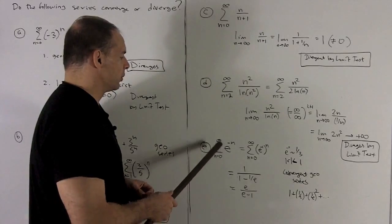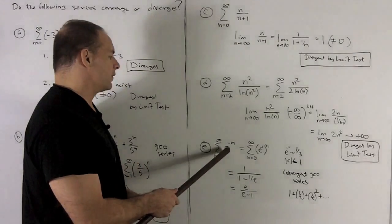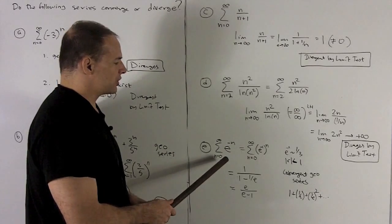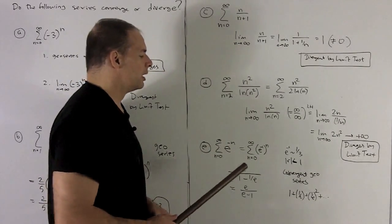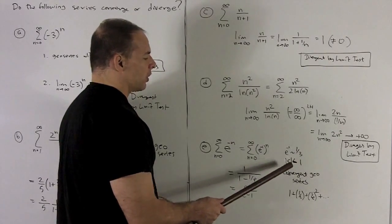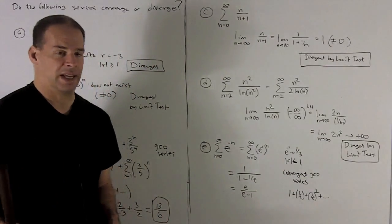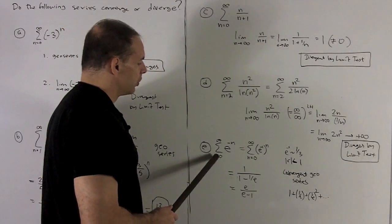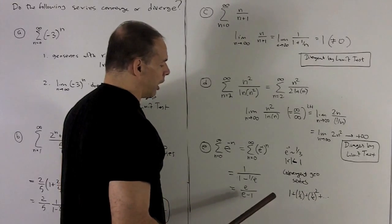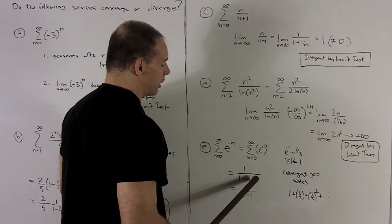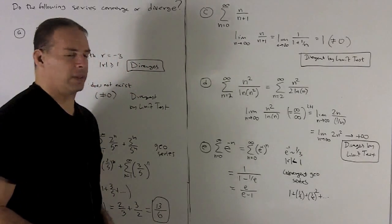Finally, the sum from n equals 0 to infinity of e^(-n). Don't be thrown by the two letters — e is roughly 2.7, so this is really a geometric series. Writing e^(-n) as (1/e)^n, our r is roughly 1/3, with absolute value less than 1, so it's a convergent geometric series. Writing out the first few terms starting at n=0: e⁰ + 1/e + 1/e² + ..., so a = 1. The sum is 1/(1 - 1/e). Multiplying top and bottom by e gives e/(e-1).